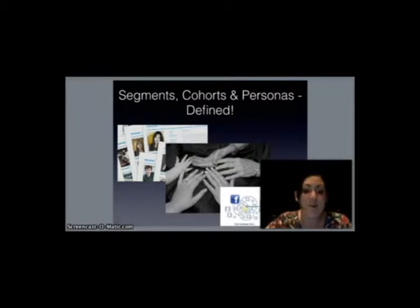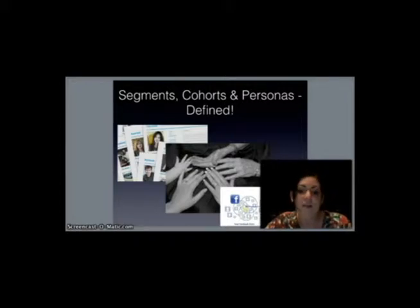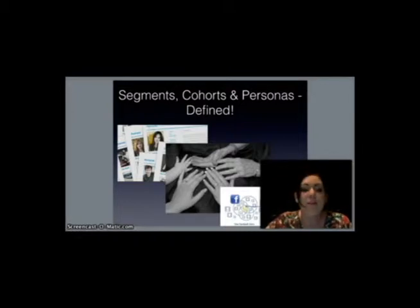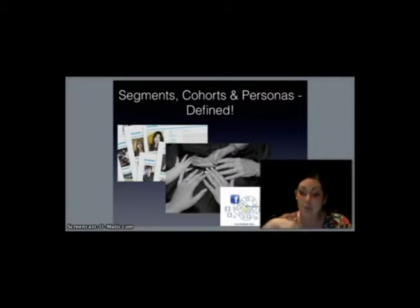Cohorts are groupings of target audiences based on similar life experiences. This can be best described as generations — for example, baby boomers. And finally, personas are people in the target audience with combined attributes that represent a single user. A good example of this would be a hipster.